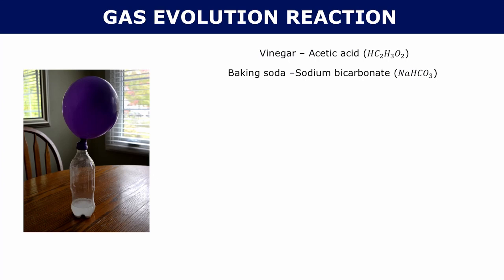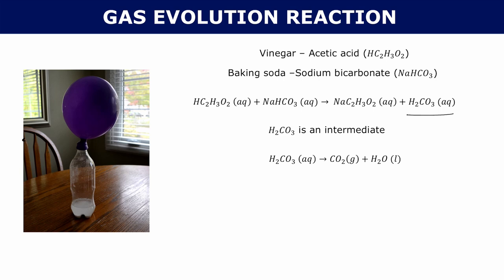If you look at the reaction happening between acetic acid and sodium bicarbonate, you would expect a gas to be formed. Acetic acid with sodium bicarbonate produces sodium acetate and carbonic acid. Both of these are aqueous, so where does a gas come in? Carbonic acid is an intermediate — it doesn't like being in that state and would rather decompose into carbon dioxide and water. So whenever carbonic acid is a product, it immediately decomposes into CO₂ gas and water. What's really in that balloon is carbon dioxide.